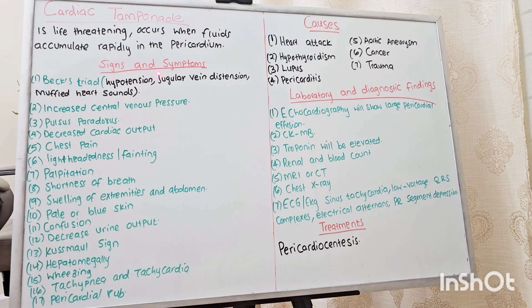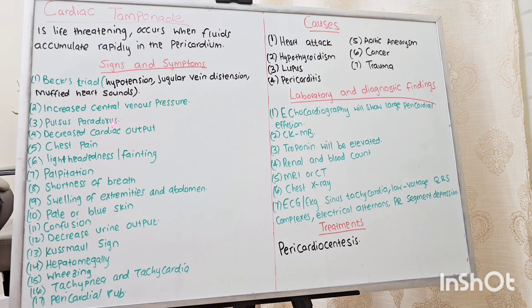Signs and symptoms of cardiac tamponade: the typical sign is Beck's triad, which includes hypotension, jugular vein distension, and muffled heart sounds. Another symptom is increased central venous pressure, pulsus paradoxus, decreased cardiac output, chest pain, lightheadedness, or fainting.